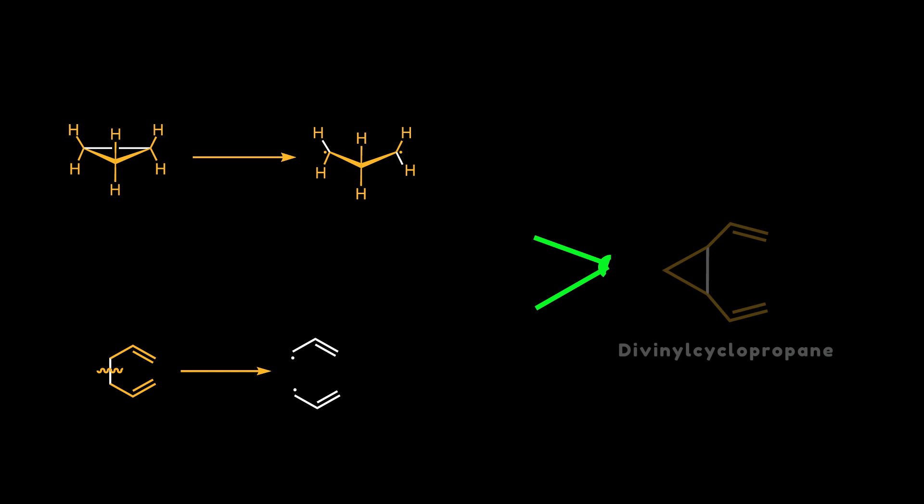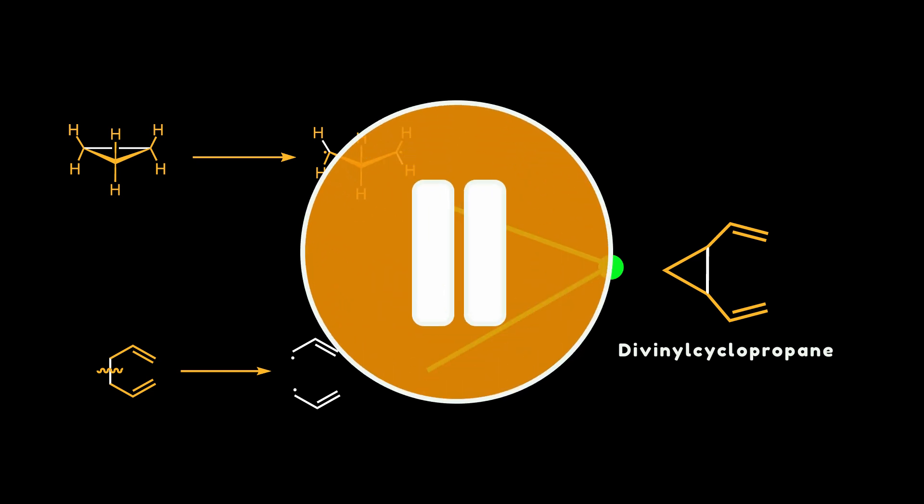Doering and Roth then considered the consequence of combining the effects of allylic stabilization and the strain of a cyclopropene ring in 1,2-divinylcyclopropene, where the carbon-carbon bond is part of a cyclopropene ring and has two allyl arms. Before continuing, pause the video and try to calculate the energy for breaking this bond based on the values from the previous examples.